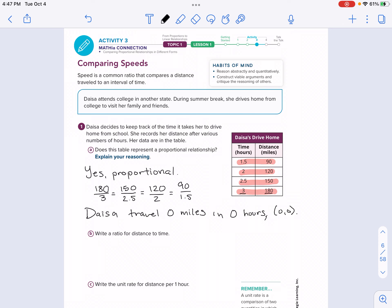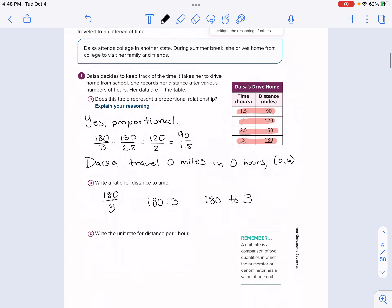Let's get to part B, where it says write a ratio for distance. You can use any one of these rows. I'll use the last one, which is we can write the ratio of 180 over 3. A couple of different ways that we can represent this. We can write it as a fraction. We can write it using a colon. 180 colon 3 or we say 180 and then the word to, 3.